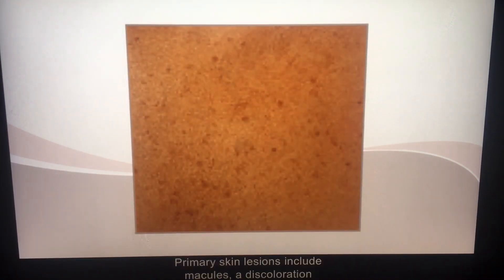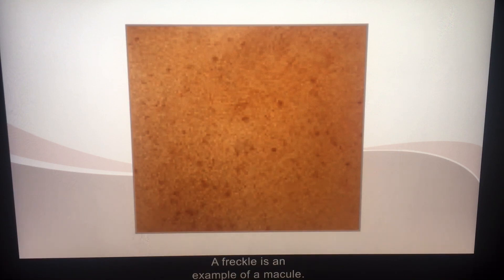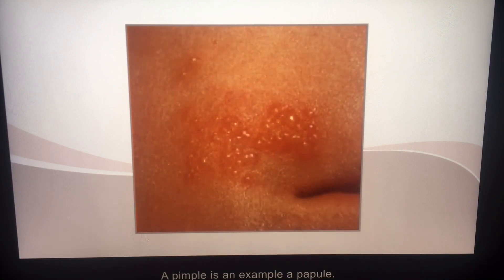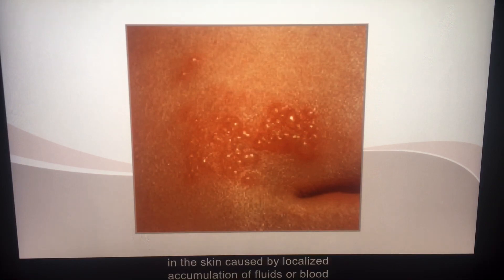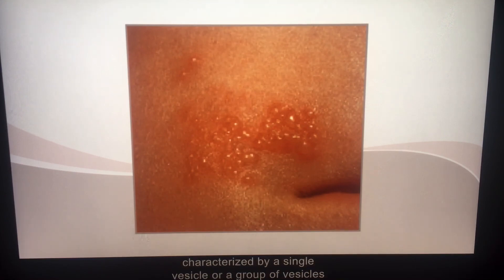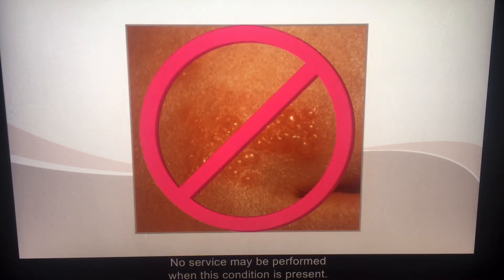Primary skin lesions include macules, a discoloration appearing on the skin's surface — a freckle is an example of a macule. Papules are hardened red elevations of the skin in which no fluid is present; a pimple is an example of a papule. Pustules are fluid-filled elevations in the skin caused by localized accumulation of fluids or blood just below the epidermis. Herpes simplex, also known as fever blisters, is a contagious chronic condition characterized by a single vesicle or group of vesicles on a red, swollen base. No service may be performed when this condition is present.